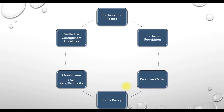To summarize the complete cycle: first, create a consignment info record (purchase info record of consignment type), then create a purchase requisition which converts into a purchase order, then receive the goods, and once received either issue them for production or transfer them into our own stock. Finally, perform the consignment settlement. That is the complete process of the consignment procurement cycle in SAP.